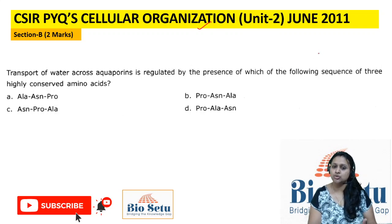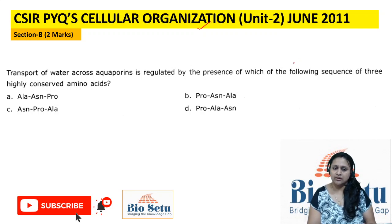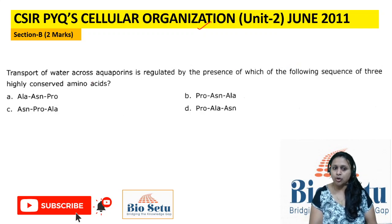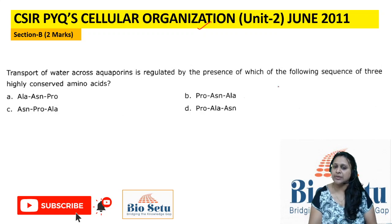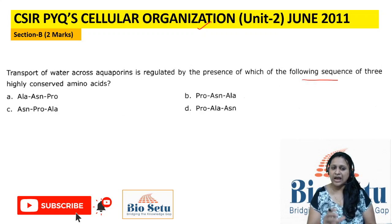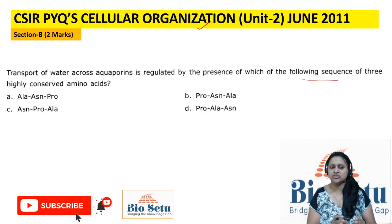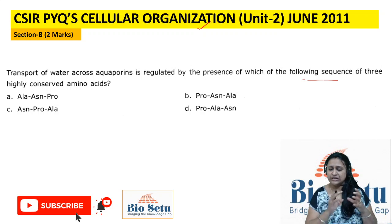We will start with June 2011. In June 2011, Section B, there were 5 questions in cellular organization. Starting from the first question: 'Transport of water across aquaporins is regulated by the presence of which of the following sequence of three highly conserved amino acids?' This is a direct question from the structure of aquaporin.